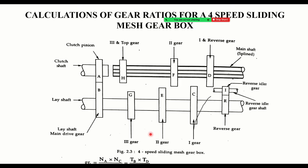In a gearbox, you should remember these components. The clutch shaft carries the clutch pinion. Then there is the main shaft, and below it is the lay shaft, which is also called the counter shaft.